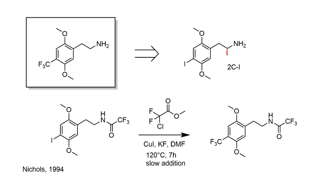As for how the trifluoromethylation reaction happens, they use methyl chlorodifluoroacetate — a substituted ester — in the presence of copper(I) iodide and potassium fluoride under reasonably harsh conditions: 120 degrees in dimethylformamide for 7 hours during slow addition of the reagents. But this converts the aryl iodide bond into an aryl trifluoromethyl compound.